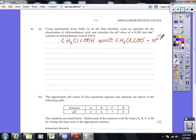That's the equation for the dissociation of the acid. We have to find the pH of a certain concentration of chloroethanoic acid. Whenever we have to find the pH of a weak acid solution, we're going to have to use the equilibrium expression.